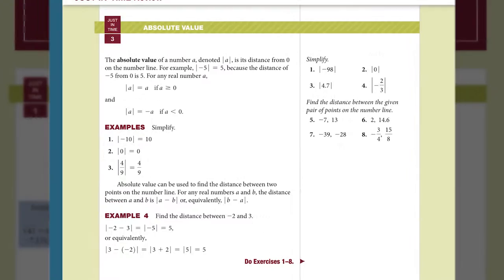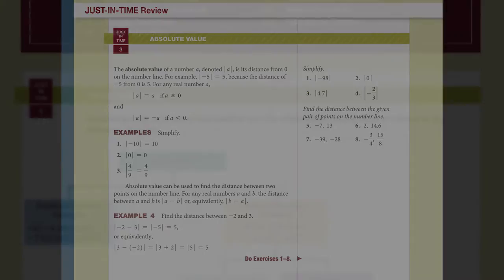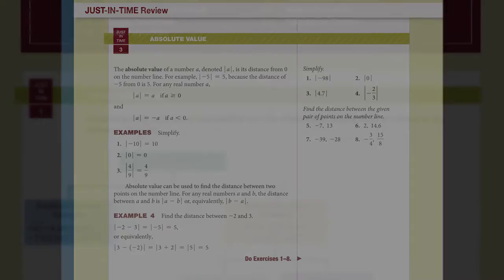All answers, even and odd, are included in the answer section at the back of the text. Just-in-time icons are positioned throughout the text next to the example where review of an intermediate algebra topic would be helpful. This review format allows for reviewing a topic in more than one chapter. The review can be used in an individualized instruction format, since some students will require more review than others.